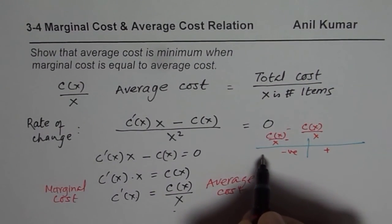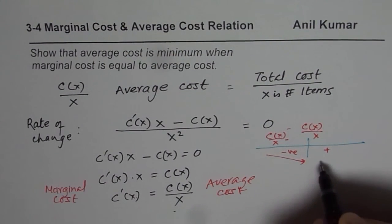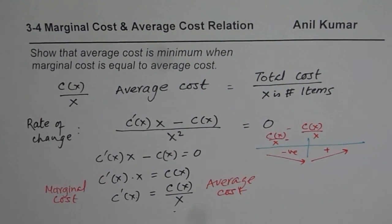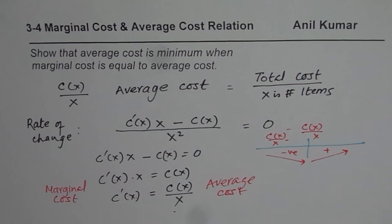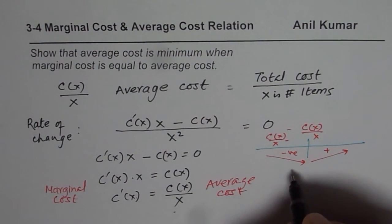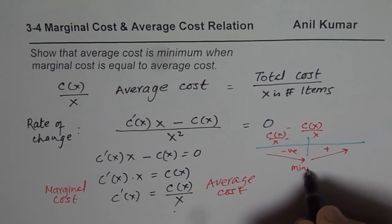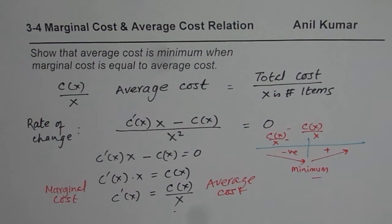So that means the function is decreasing in this side and increasing on the other side. So that results into the minimum value. So that ensures that we get minimum at the production level when marginal cost equals average cost.